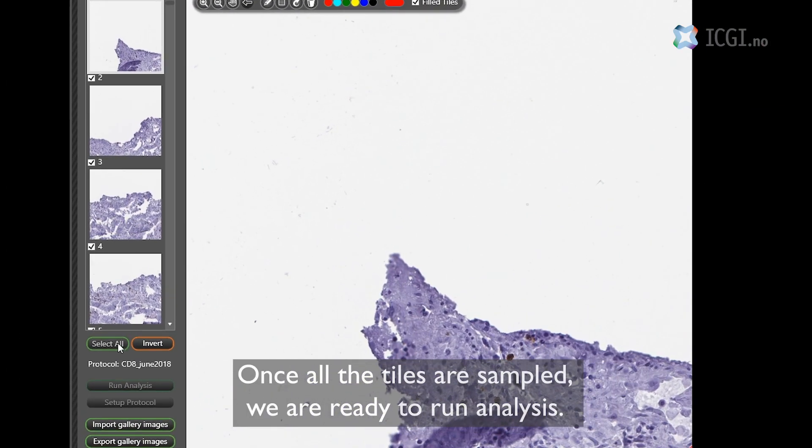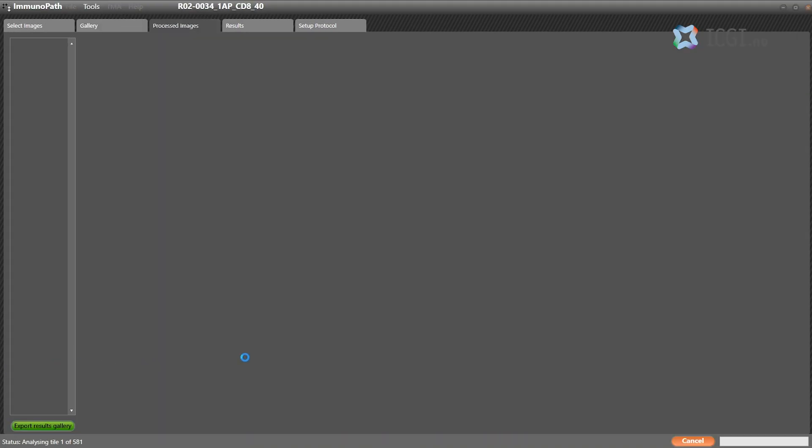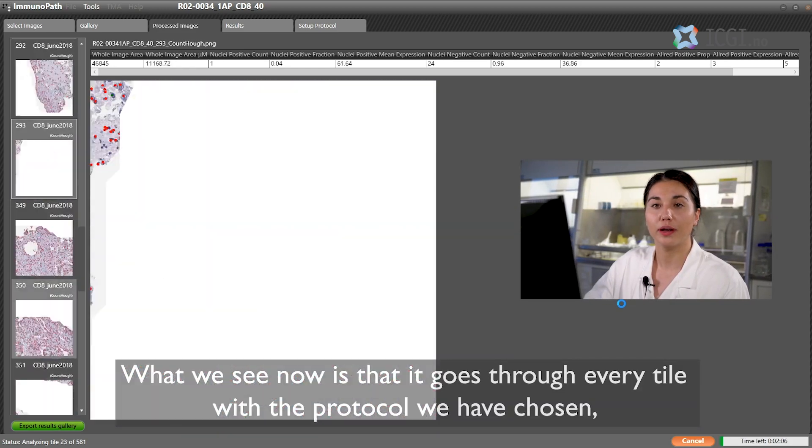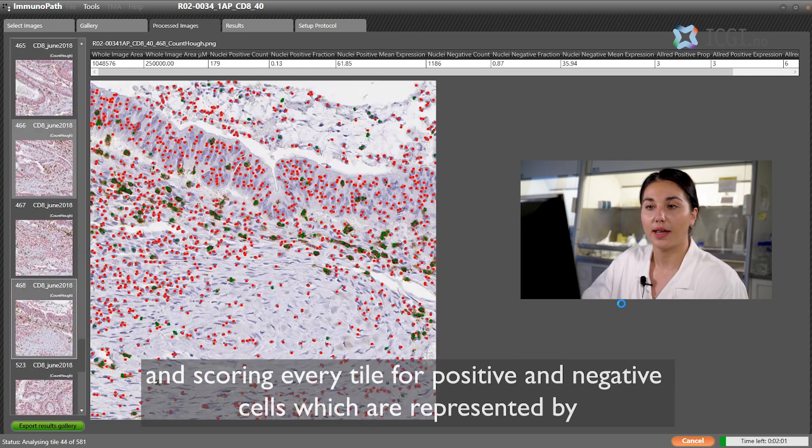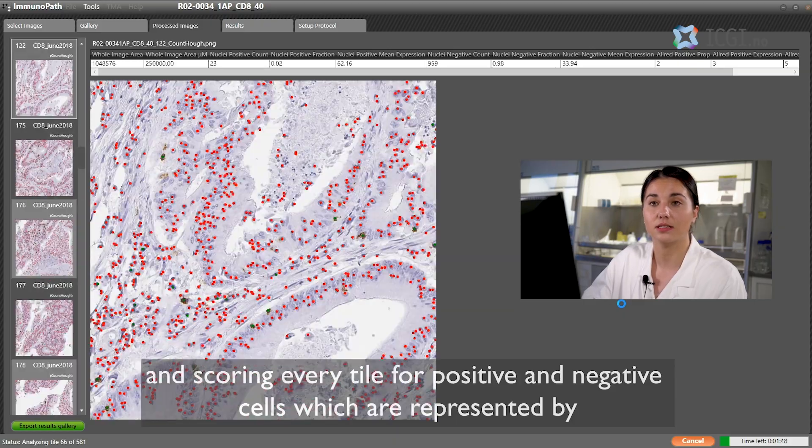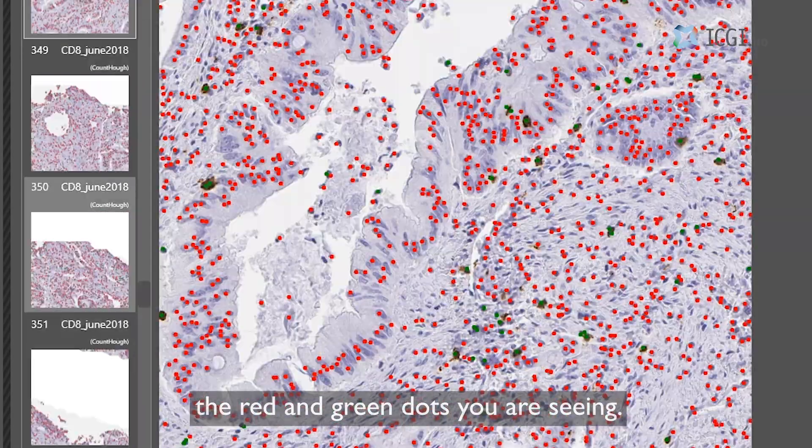Once all the tiles are sampled we are ready to run analysis. What we see now is that it goes through every tile with the protocol we have chosen and scoring every tile for positive and negative cells which are represented by the red and green dots you are seeing.